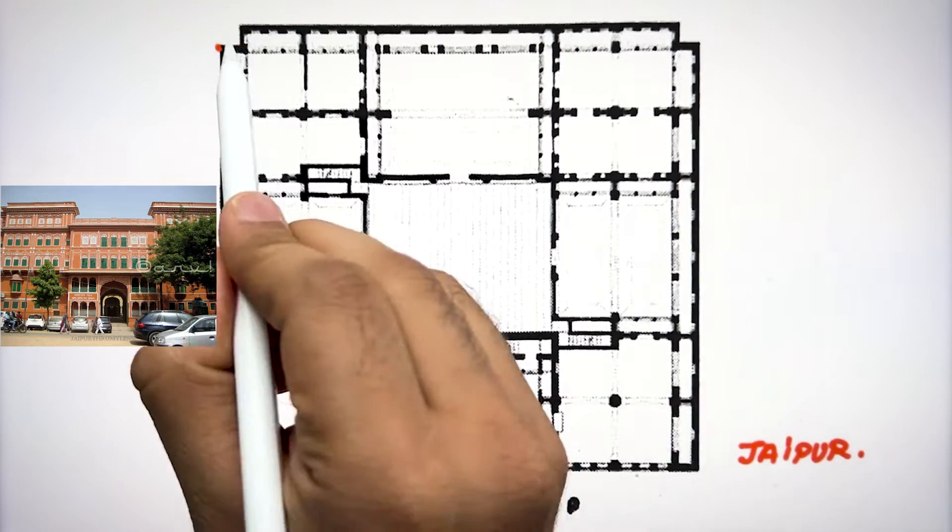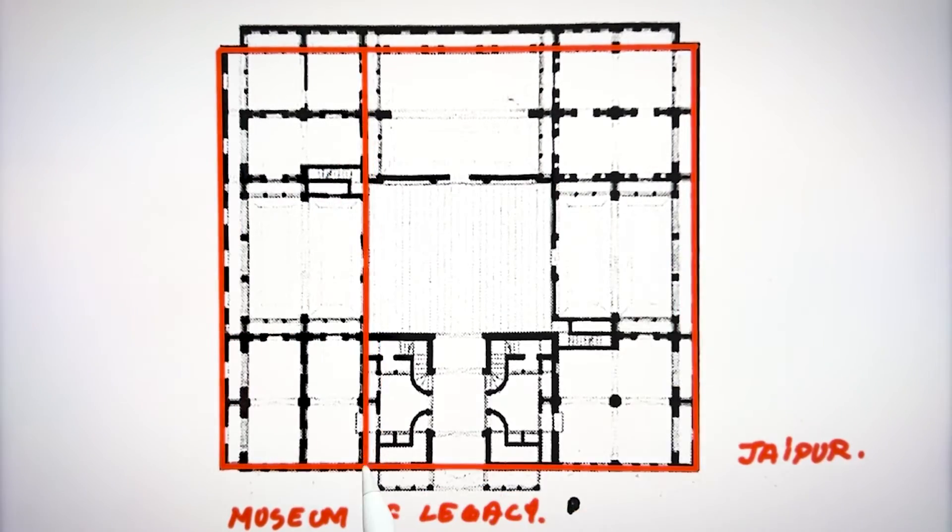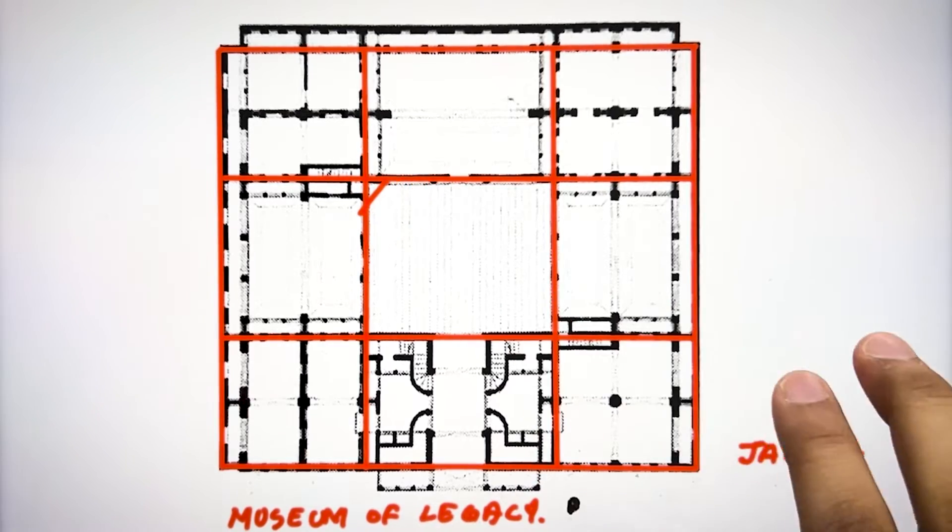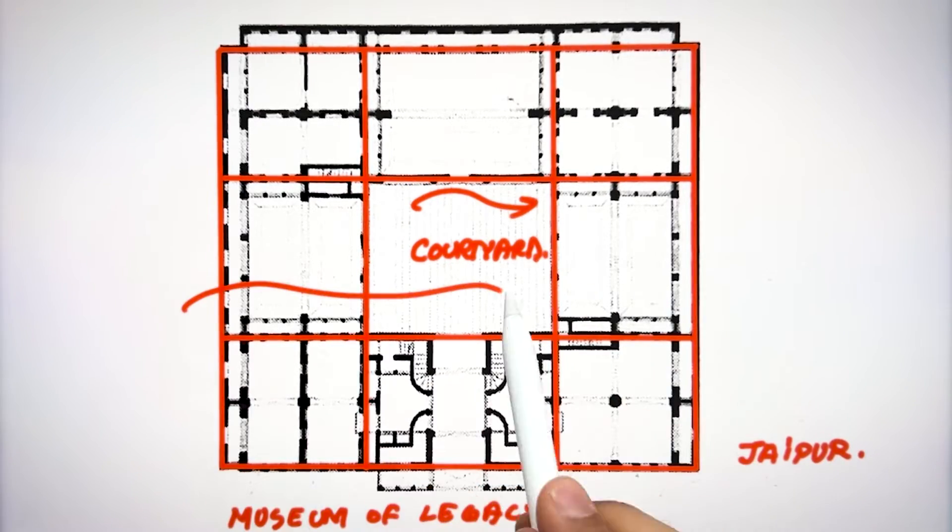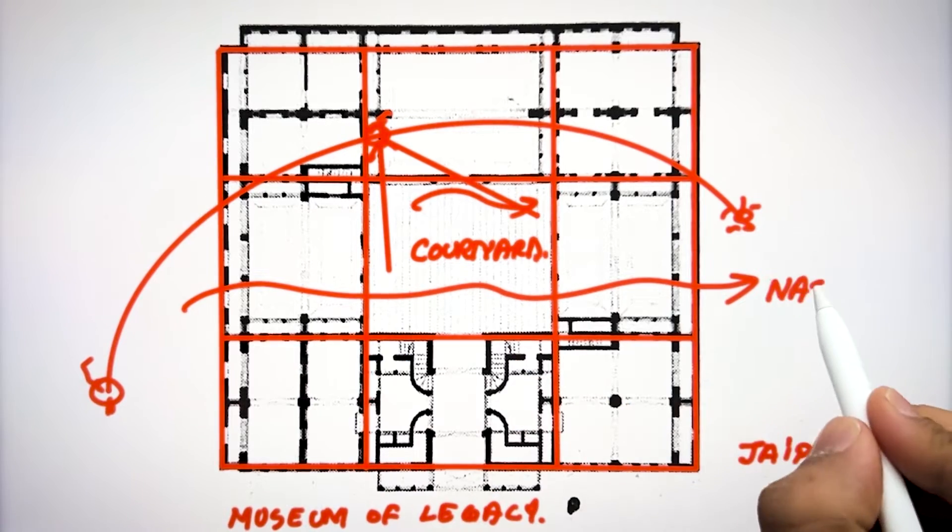This is the typical courtyard house typology in Jaipur. This building is the Museum of Legacy. Here the center grid is the courtyard which suits the hot and dry climate of Jaipur. The center space provides cross ventilation as well as natural light inside the house.